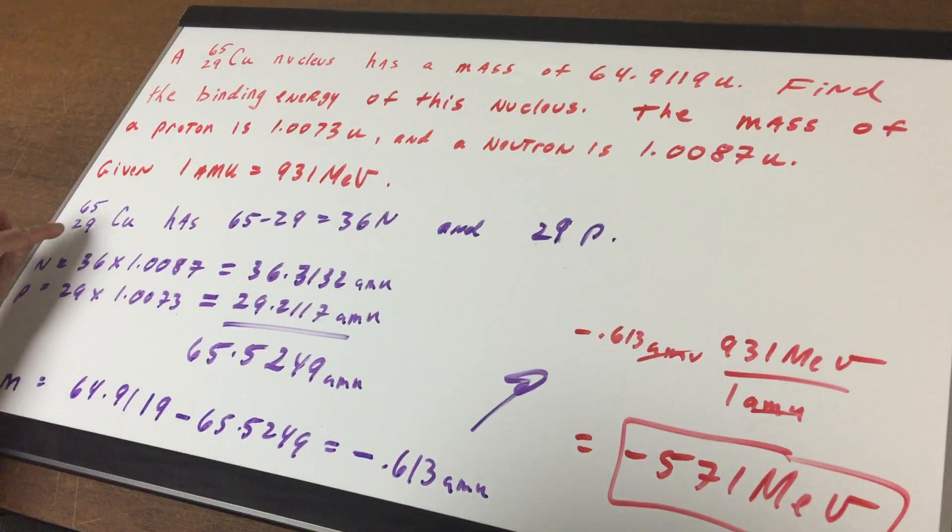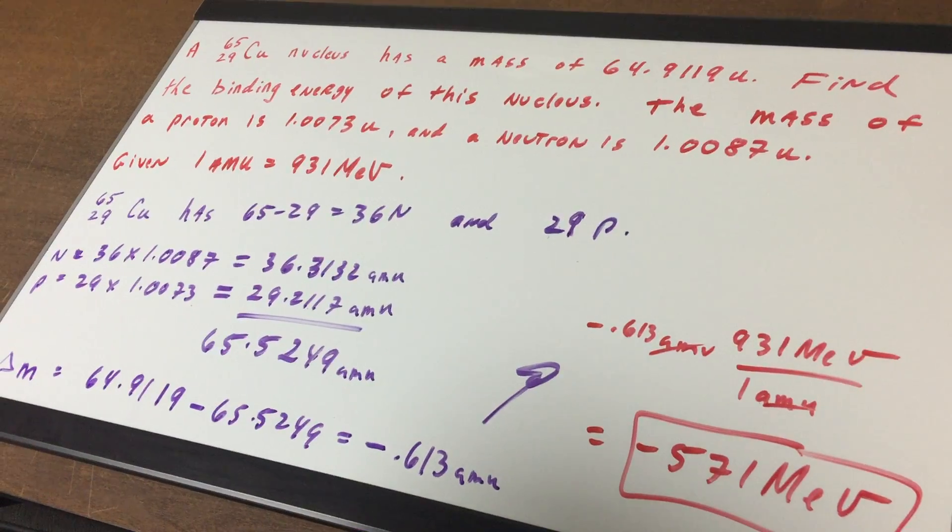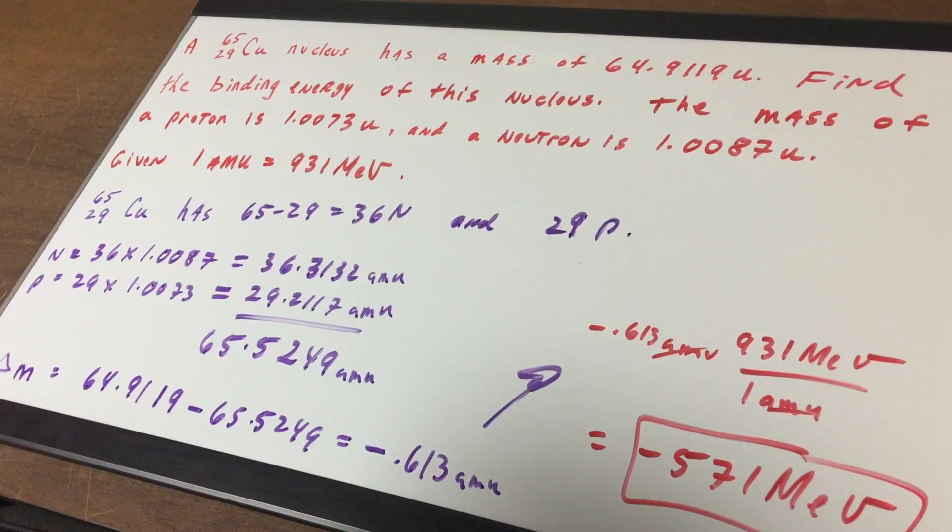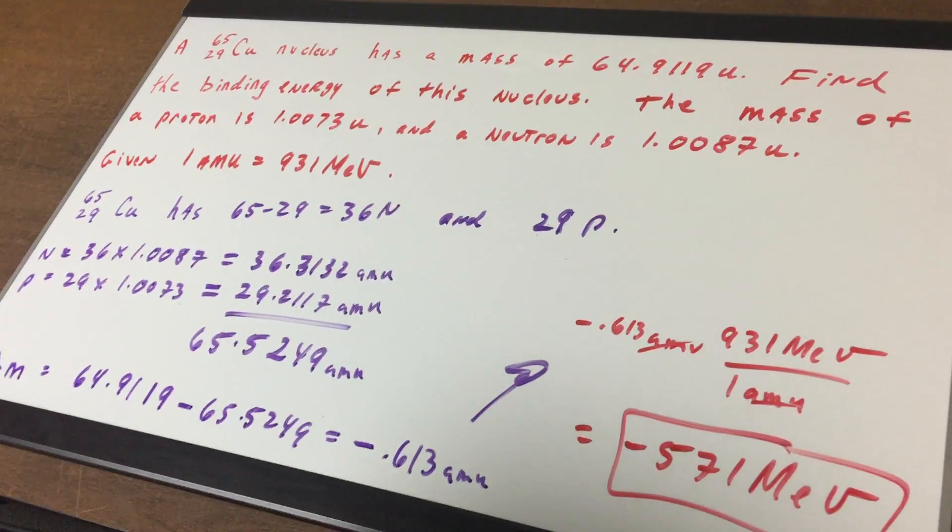The number of protons is simply the atomic number. So we have 36 neutrons and 29 protons.